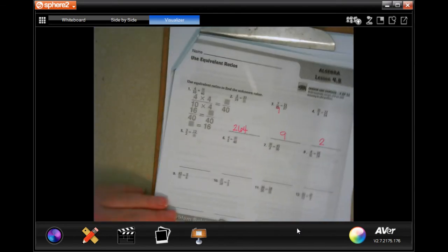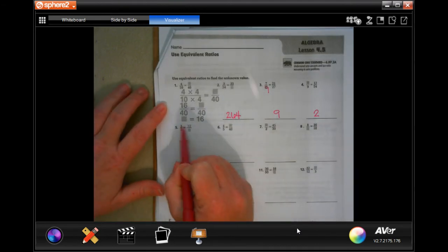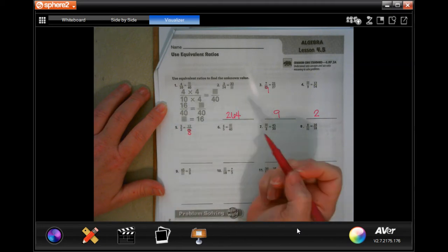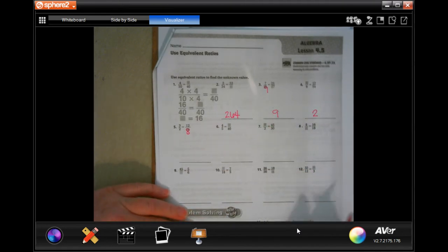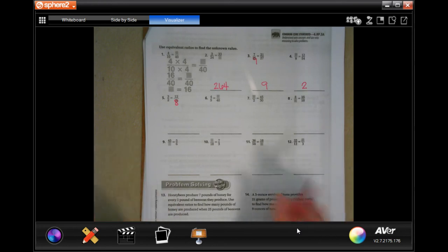So 3 times 4 is going to be 12, or 12 divided by what is 3? 4. So then 2 times 4 is 8. You guys do 6 through 12. You totally can.